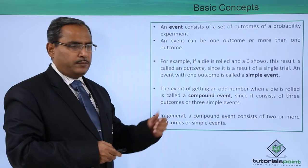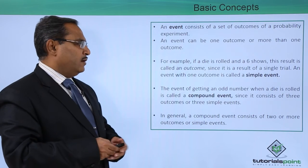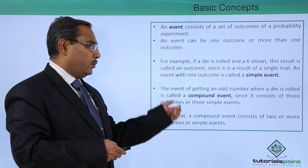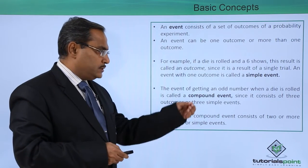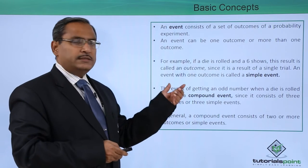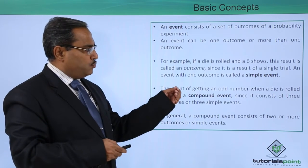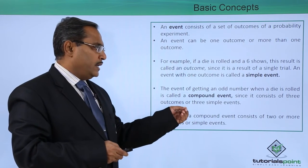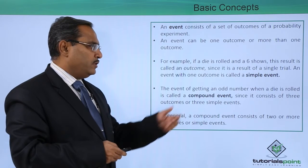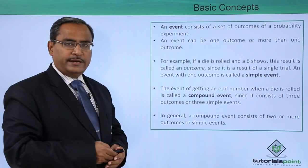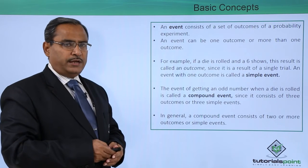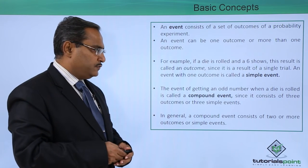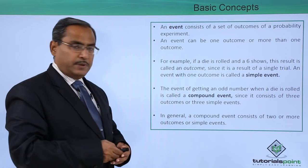One event with one outcome is known as a simple event. The event of getting an odd number when a die is rolled is called a compound event, since it consists of three possible outcomes or three simple events. To get an odd number after rolling a die, this is known as a compound event because it consists of three different outcomes: 1, 3, and 5. In general, a compound event consists of two or more outcomes or simple events.